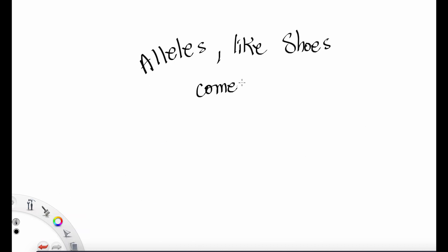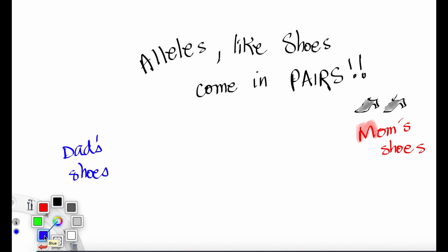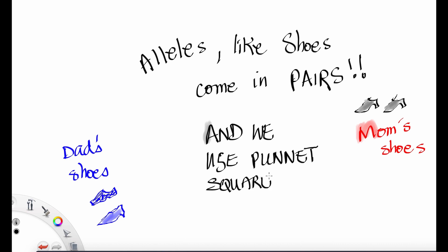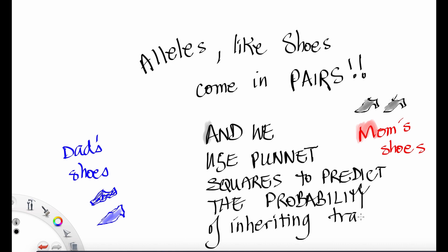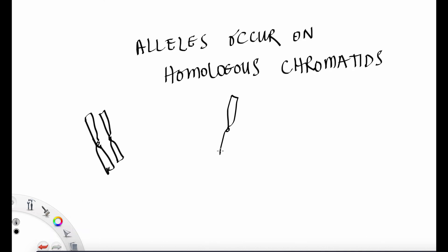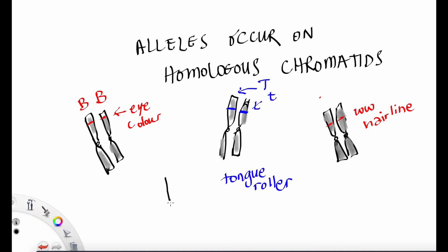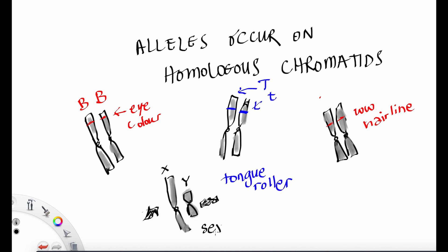Remember, alleles are like shoes — they always come in pairs. There's mom's shoes and there's dad's shoes. We use Punnett squares to predict the probability of inheriting certain traits. Alleles occur on homologous chromatids — matching pairs that have genes on them, such as eye color, tongue rolling, having an interesting hairline, and also sex chromosomes determining male or female.